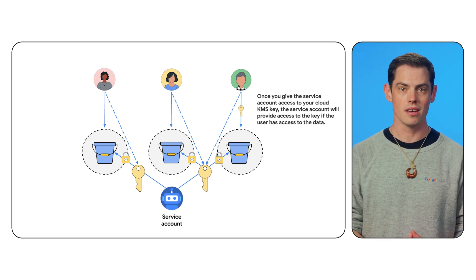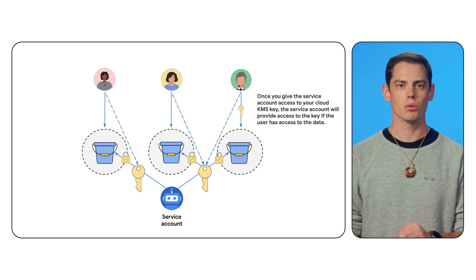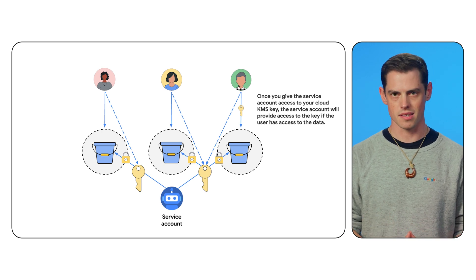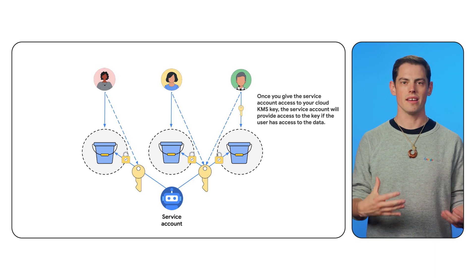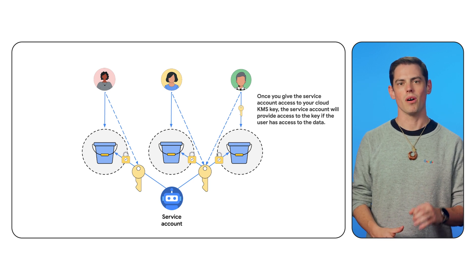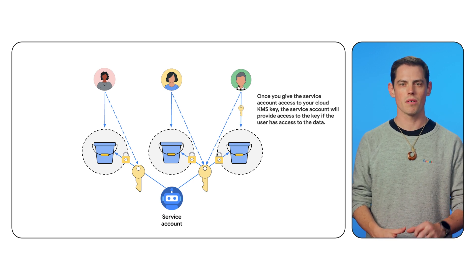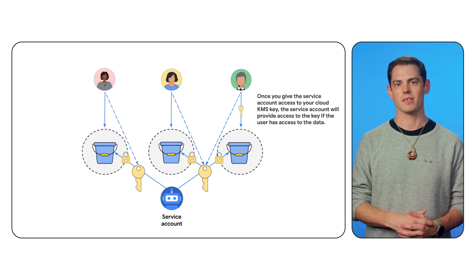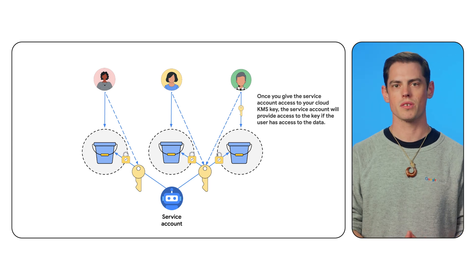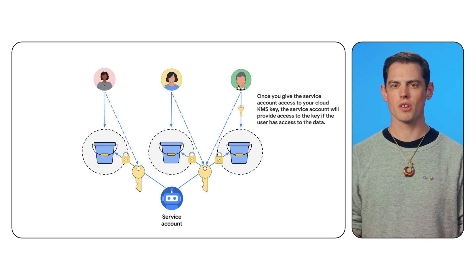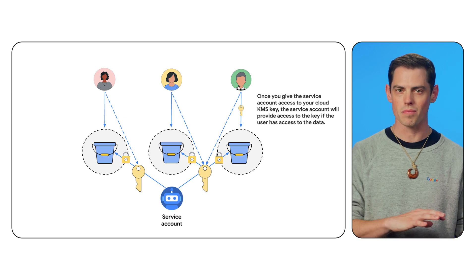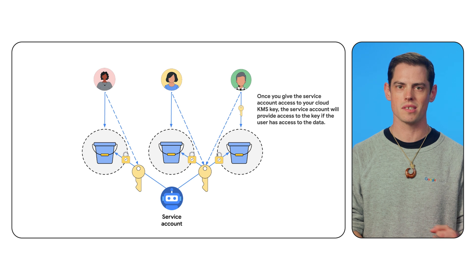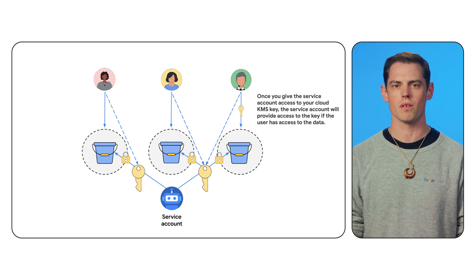If you use KMS AutoKey, AutoKey will check that the service account exists and will assign it the correct access to the key. You can just access the data in your bucket — the service account will automatically decrypt the data for you if you have access to the bucket. No additional request or access is required, and since the service account handles the encryption and decryption in the background, the user experience for accessing your bucket and other Cloud resources is similar to using Google's default encryption.